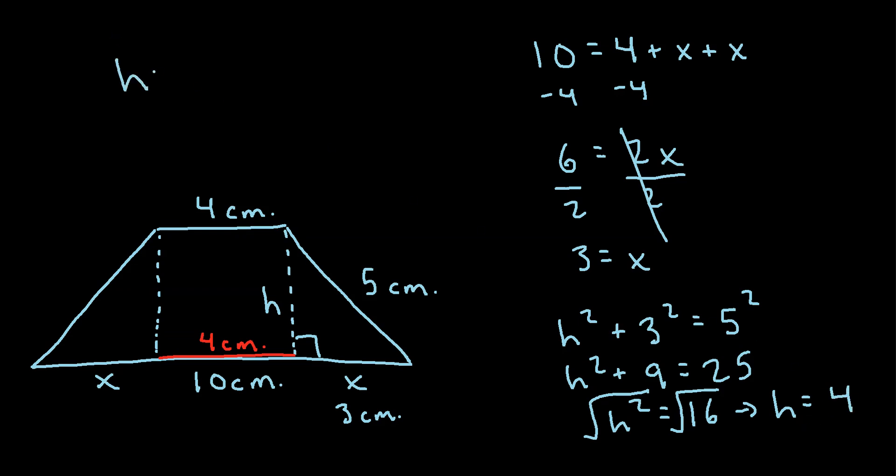So I'll write it over here. Our final answer is h is equal to 4 cm. So that is this distance right here. So by recognizing that we had a right triangle right here, we were able to solve for the height. Thank you.